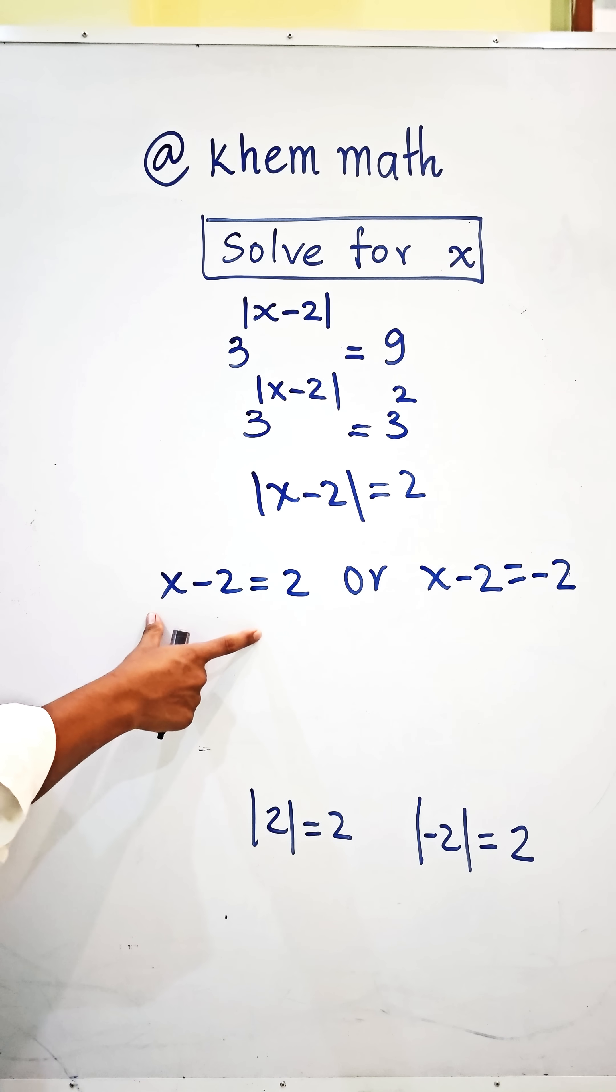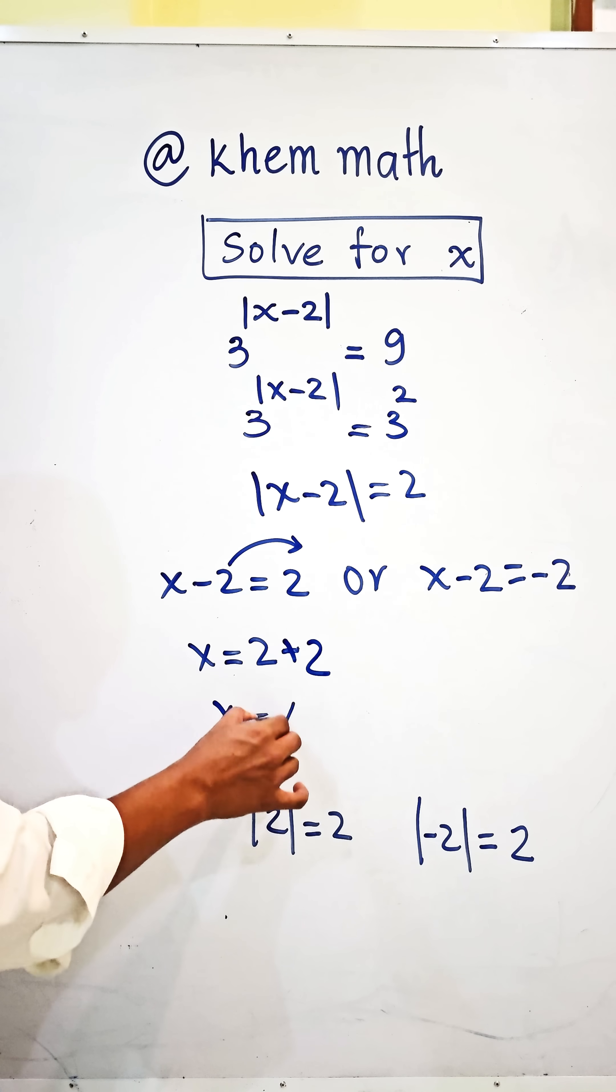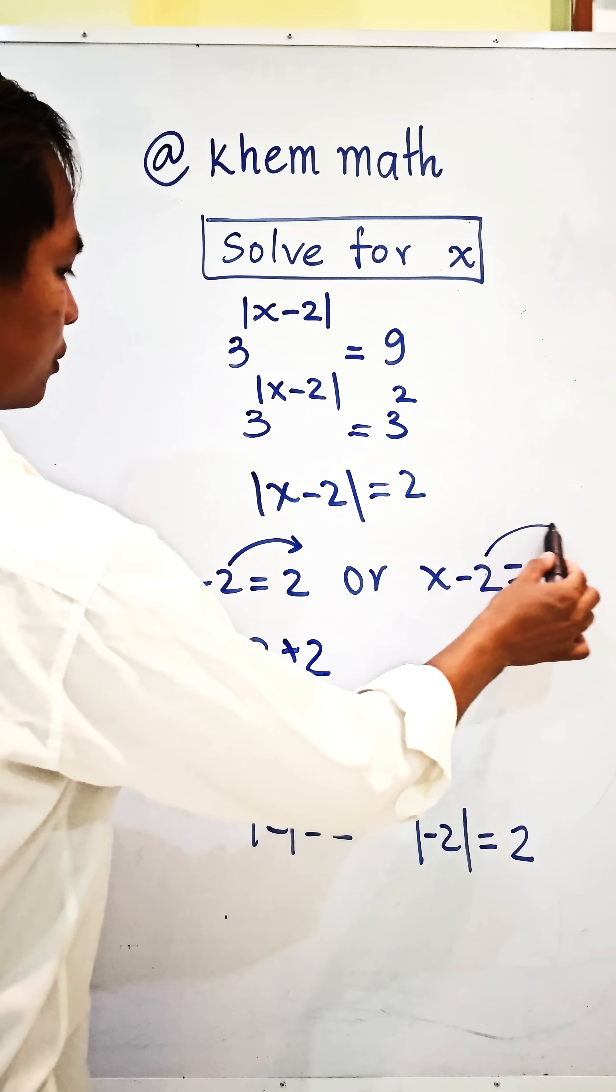For this we move negative 2 to the right hand side. We change it to the right hand side, we get plus 2, so x equals 4. And for the other equation, we also take negative 2 to the right hand side.